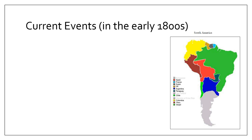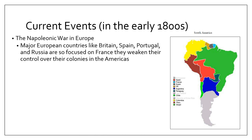Let's look at some current events back in the early 1800s. At that time, the Napoleonic Wars were going on in Europe. Major European countries like Britain, Spain, Portugal, and Russia were focused on battling France, which was being led by Emperor Napoleon — a great military conqueror whose armies were marching all across Europe. They were so focused on defeating Napoleonic France that they weakened their control over their colonies in the Americas.